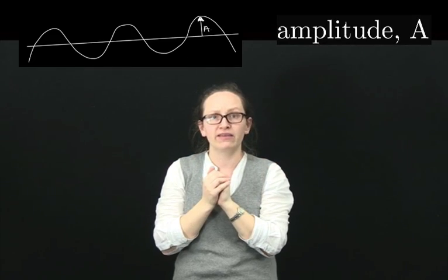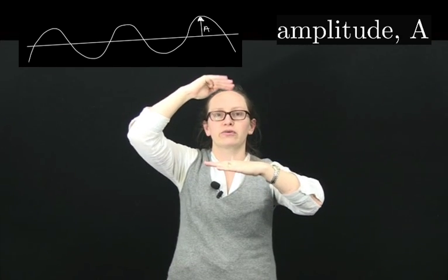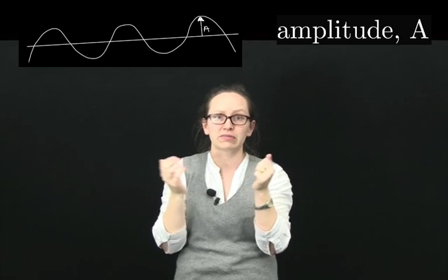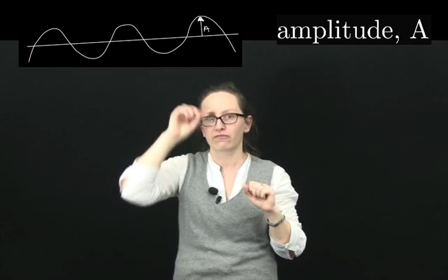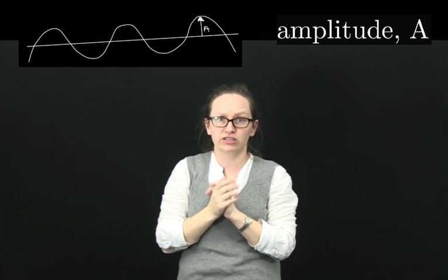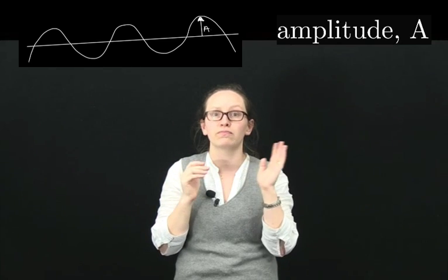The amplitude of the wave is half of the height between the crest and the trough. So the amplitude is actually the maximum distance that the particles can be from their equilibrium position. So amplitude is generally given the symbol capital A and is also measured in meters.